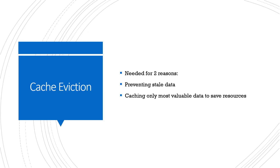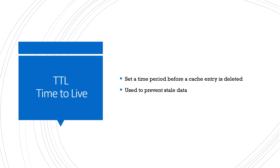A key concept is cache eviction. We need it for two reasons: to prevent stale data — we don't want something sitting in cache too long because if it's updated we don't want out-of-date content served to users — and to only cache the most valuable data to save money and resources. A lot of stuff in your database might never or very rarely be requested, so it doesn't make sense to store that in cache.